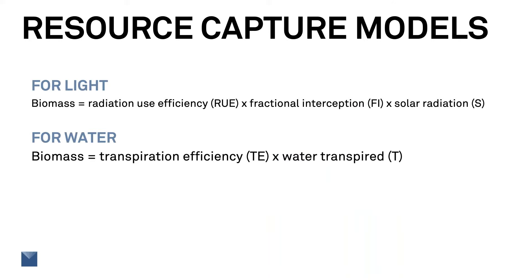From the last webinar, we had a light capture model that said biomass could be computed as the product of radiation use efficiency, fractional interception of the radiation, and the cumulative incoming radiation. Now we have another resource capture model that says biomass is equal to the product of transpiration efficiency and the transpired water. Both equations will always be correct — if radiation is limiting, the plant will adjust the transpiration efficiency, and if water is limiting, the plant will adjust the radiation use efficiency. For these models to be useful, we need to see which is the most limiting.